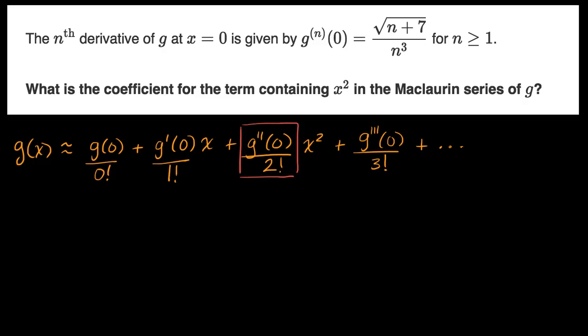Well, they tell us that over here. It's a little bit unconventional where they give us a general formula for any derivative evaluated at x equals zero. But that's what they're telling us here. So in this case, the n isn't zero, the n is the derivative we're taking, and that's going to be our second derivative.